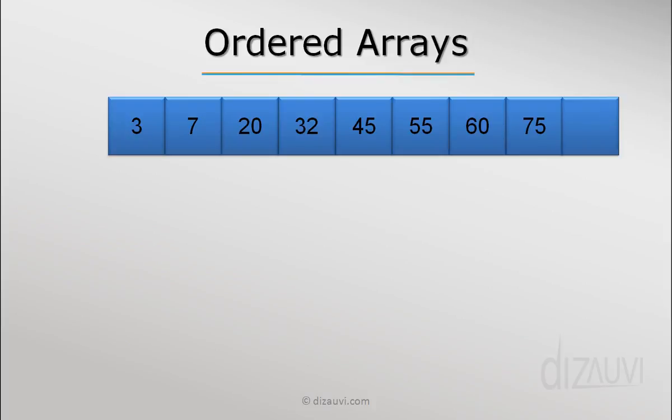Let's see how to insert and delete items in an ordered array and the time complexity involved in these operations. Let's say we want to insert this item 52 in the ordered array shown.